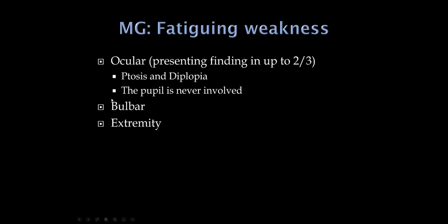Next involved are bulbar musculatures — dysarthria and dysphagia are very common — and then finally weakness in the extremities. The key feature of myasthenia gravis is fatiguing weakness. When examining a patient, we try to fatigue the neuromuscular junction: we have the patient look up at the ceiling for a couple of minutes and may see the curtain sign, where the eyelid drops. Or we have the patient look back and forth and notice one eye is not working well.